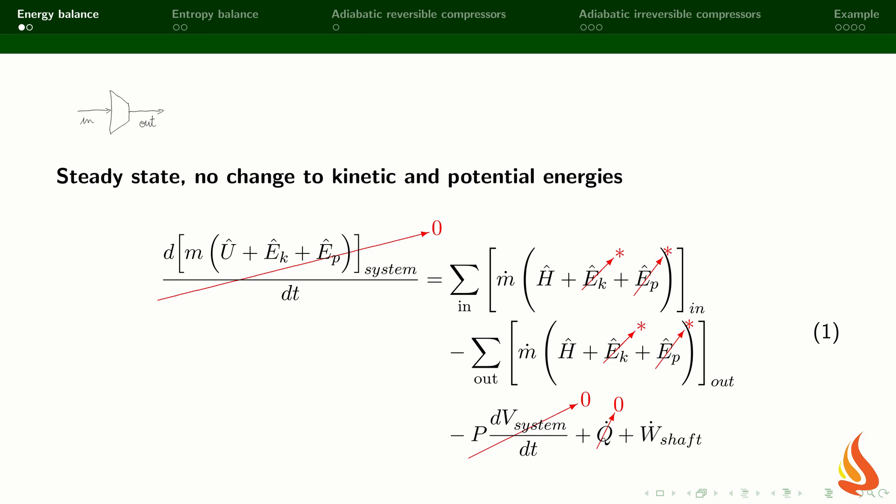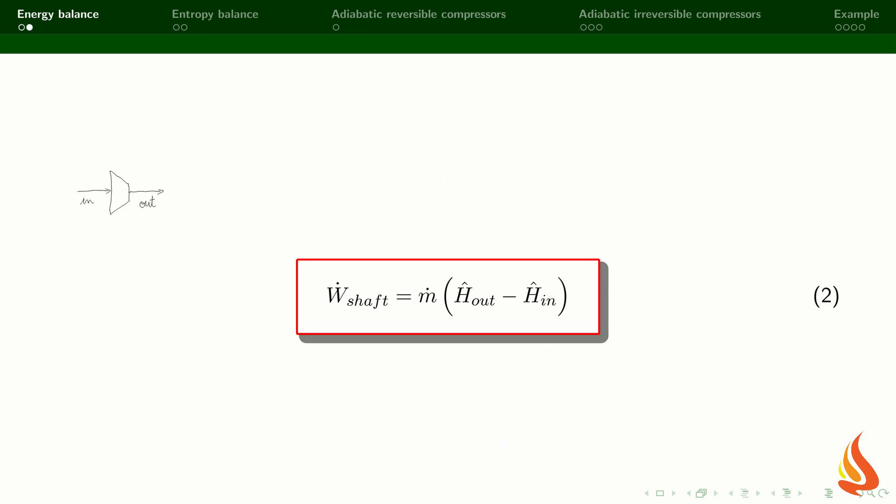Let's turn our attention to the energy balance. For a steady state operation, the time derivatives are equal to zero, the heat transfer rate is also equal to zero because the compression process is adiabatic, and we will neglect changes to the kinetic and potential energies. After cancelling all these terms, what's left in the energy balance is shown in equation 2. We can use it to calculate the compressor power — it is equal to the mass flow rate times the difference of the specific enthalpies of the output and input streams.